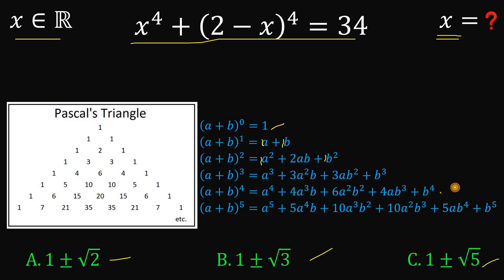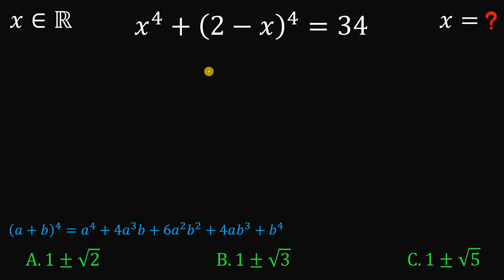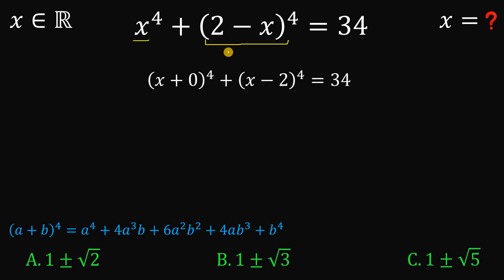Here we want the row for (a plus b) raised to the power of 4. We can expand this as a to the fourth plus 4a cubed b plus 6a squared b squared plus 4ab cubed plus b to the fourth. However, I don't want to directly expand (2 minus x) to the fourth power because we cannot cancel anything. Instead, we rewrite x to the fourth as (x plus 0) to the fourth, and since negative 1 to the fourth power is positive 1, we can rewrite (2 minus x) to the fourth as (x minus 2) to the fourth.